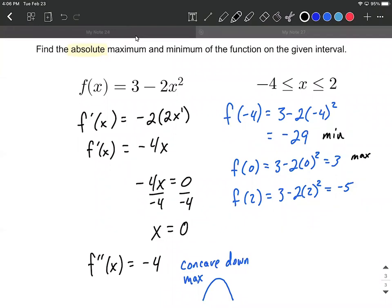The actual minimum is going to be -29, occurring at -4. The absolute maximum is going to be 3, occurring at 0. I hope this helps out on finding absolute maximums and minimums. Good luck to you on it.